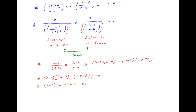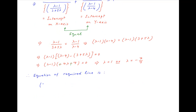It therefore follows that lambda equals 1 or lambda equals minus 7/4. The equation of the required line is (3 plus 5 lambda)x plus (lambda minus 4)y equals lambda minus 1.